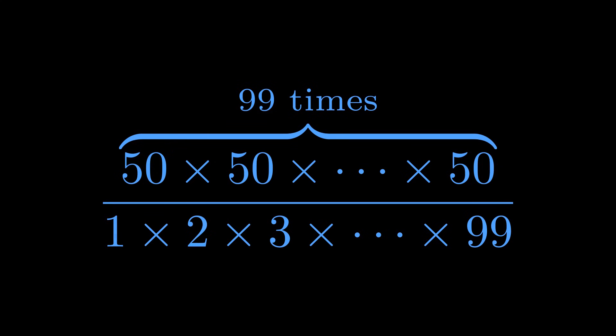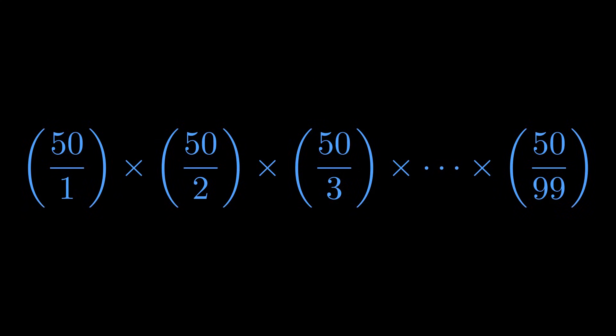Here's what's beautiful: we have 99 terms on top and 99 terms on the bottom. This matching structure lets us do something really clever. We can rewrite this whole thing as a product of 99 smaller fractions, each term in the numerator paired with each term in the denominator. And our goal is to figure out whether this product is greater than 1 or less than 1.